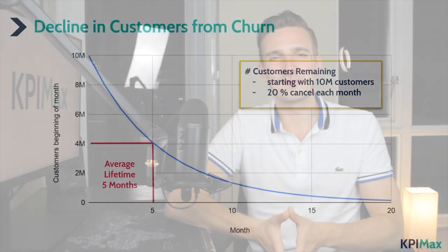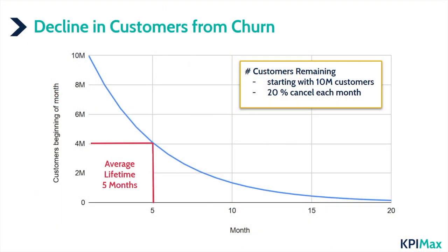20% is a really terrible churn rate and certainly not true for Netflix. Here's a graph for churn rate over time — it shows why we can calculate the average customer lifetime this way. The average lifetime is five months, and if we don't sign up any new customers we would be totally out of business within 20 months.